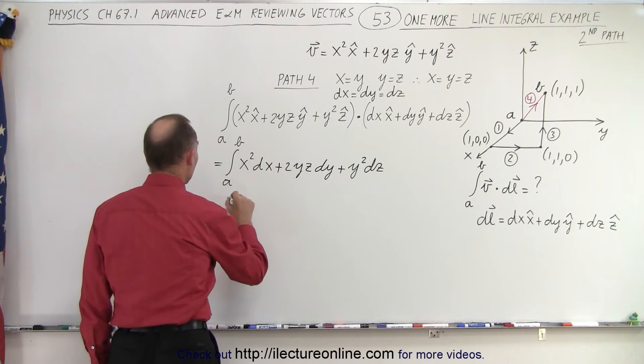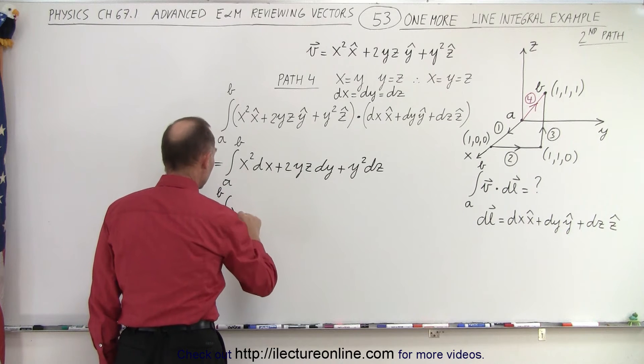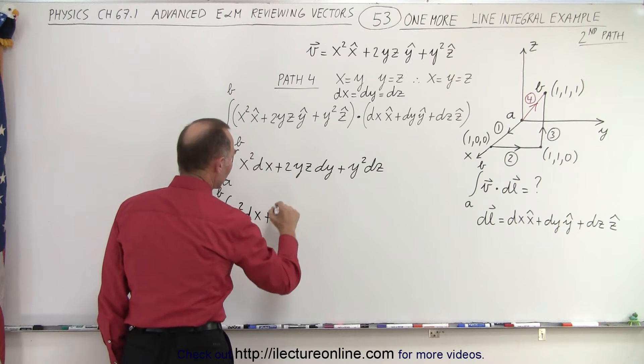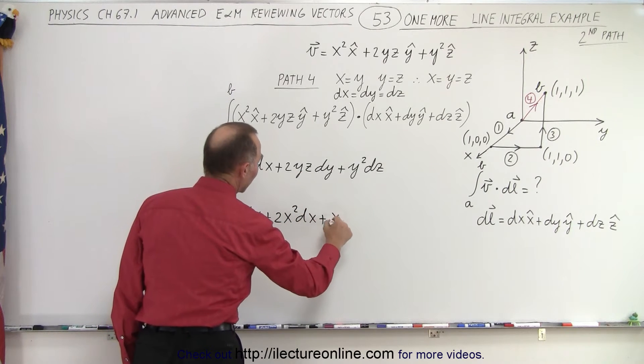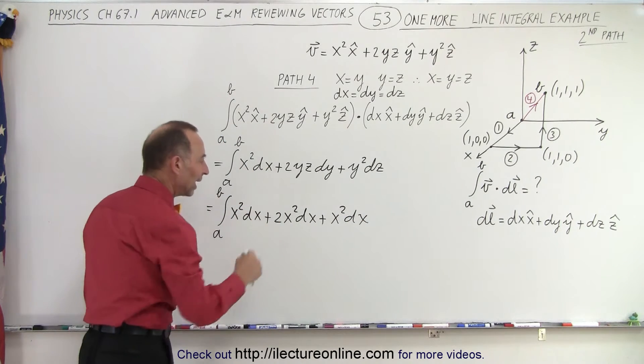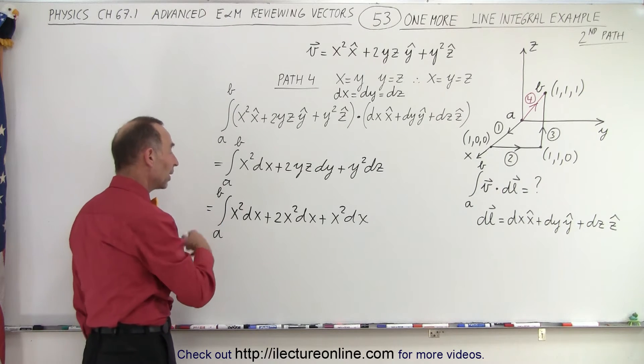So this can then be rewritten as the integral from A to B of x squared dx plus 2x squared times dx plus x squared times dx. So you can see now we have nothing but x's and dx's, we can combine them all into one, and the limits now will become x limits.